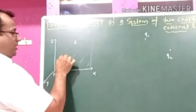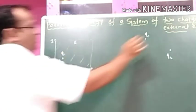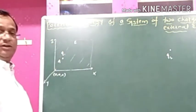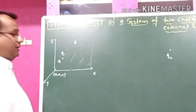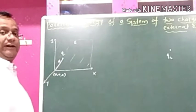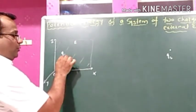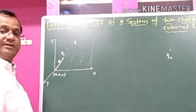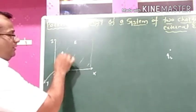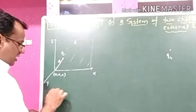Now we want to bring the first charge from this infinite position and place it at point A. When we bring the first charge from an infinite position to point A, the electric field is present in this region, and the value of electric potential at point A due to that external field is suppose V1.